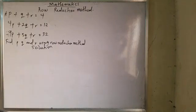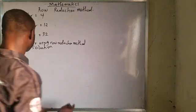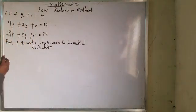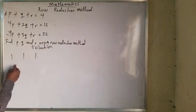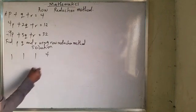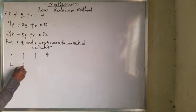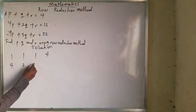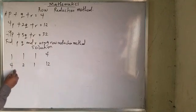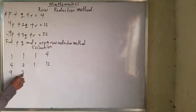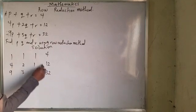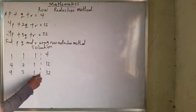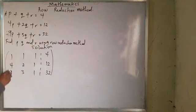For this time around, you have 1, 1, 1, 4, and 4, 2, 1, 12, and 9, 3, 1, and 32. That is what we are talking about.